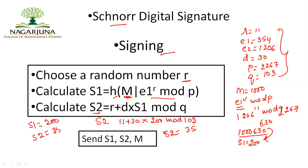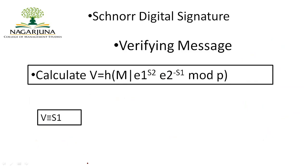Bob receives s1 = 200, s2 = 35, and m = 1000. He computes v using the verification formula and obtains v = 200. Since v ≡ s1 (both are 200), Bob accepts the message as valid. If v were not congruent to s1, Bob would reject it. In the next video, I will explain the Digital Signature Standard (DSS). Thank you.